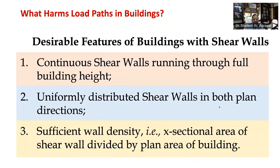Structural walls are also called shear walls as they have large stiffness and strength in the length direction and provide a very good load path. As told in an earlier tip, buildings with shear walls perform well during past earthquakes. Some desirable features of buildings with shear walls include: continuous shear walls running through the full building height, which generally offer a direct load path for inertia forces collected from horizontal diaphragms at different floor levels to be carried down to the foundation; uniformly distributed shear walls in both plan directions; and sufficient wall density, meaning total cross-sectional area of these walls in plan as a percentage of the plan area of the building.